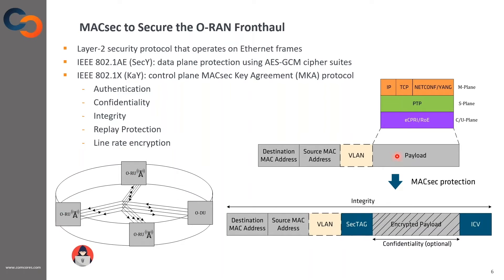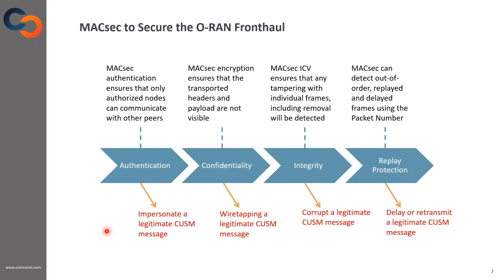For this scenario, that user data includes the control, user, synchronization, and management packets. As MagSec operates at layer 2, it provides the additional feature of line-rate encryption. MagSec is a persuasive security solution for the ORAN fronthaul. Initially, with the MagSec key agreement protocol, the radio unit and the distributed unit are mutually authenticated — a connectivity association is created and the security keys are generated. This ensures that only authorized nodes can communicate with other peers.